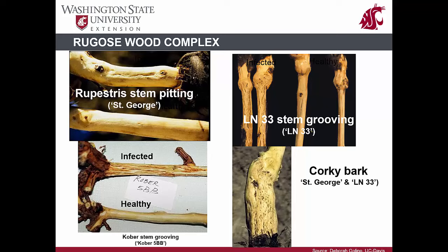Lastly, corky bark disorder shows grooving and pitting in all parts of the stem when grafted to both St. George and LN33 rootstock. Other symptoms may include red leaves, bark splitting due to the swelling of canes, and spongy callous tissues — hence the name corky bark. Indicator plants are used to determine if Vitis vinifera scions are infected with the virus. These diseases are really only of concern in regions where grafted vines are used.